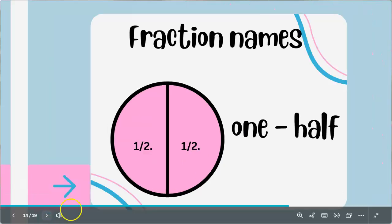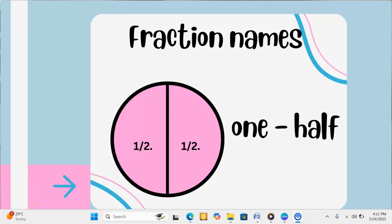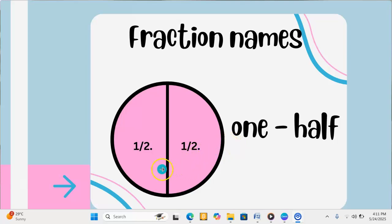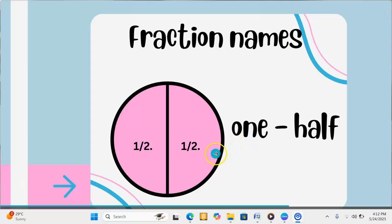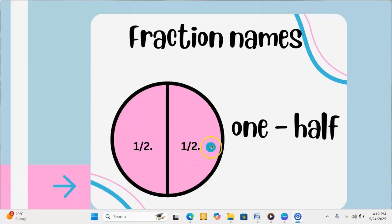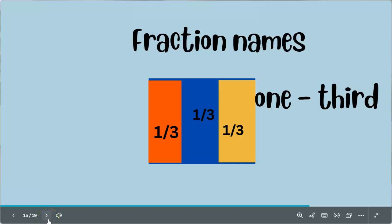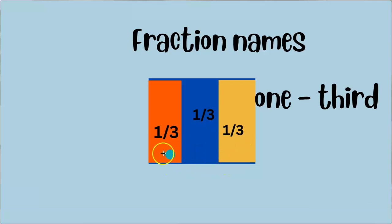Now if I have one apple and I divide it into two and take just one part, I just took one half. Whenever you see one over two written like this, it is called one half. It also works when I divide my biscuit into three parts — one, two, three. If I take one part out of three, I took one over three, and we call one over three one third. Three is what? Third. So one over three simply means one third.